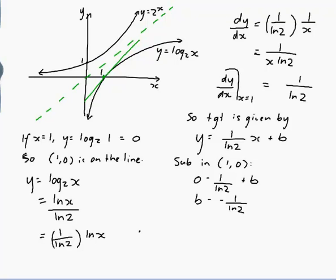So therefore the equation of the tangent is y equals 1 over ln 2 times x minus 1 over ln 2.